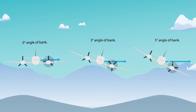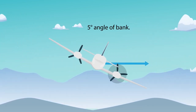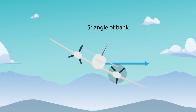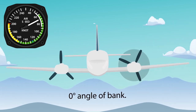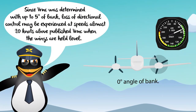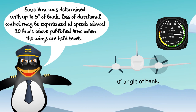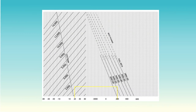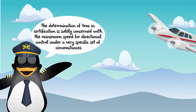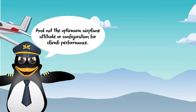Finally, maximum of 5 degrees angle of bank. As bank increases, so does the horizontal component of lift. With this increase in horizontal component of lift, VMC decreases due to the increased rudder effectiveness with the bank angle. VMC increases as bank angle decreases — in fact, VMC may increase more than 3 knots for each degree of bank reduction between 5 degrees and wings level. Since VMC was determined with up to 5 degrees of bank, loss of directional control may be experienced at speeds almost 20 knots above published VMC when the wings are held level. The 5 degree bank does not inherently establish zero sideslip or best single engine climb performance. Zero sideslip and therefore best single engine climb performance may occur at bank angles less than 5 degrees. The determination of VMC in certification is solely concerned with the minimum speed for directional control under a very specific set of circumstances, and not the optimum airplane altitude or configuration for climb performance.